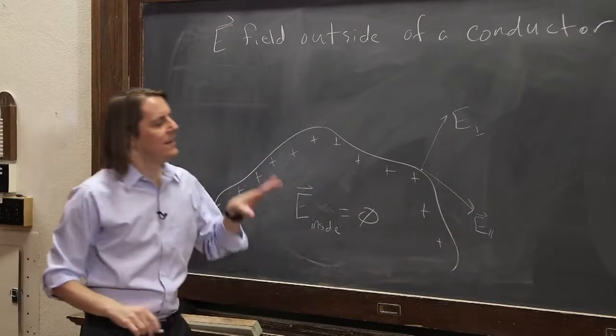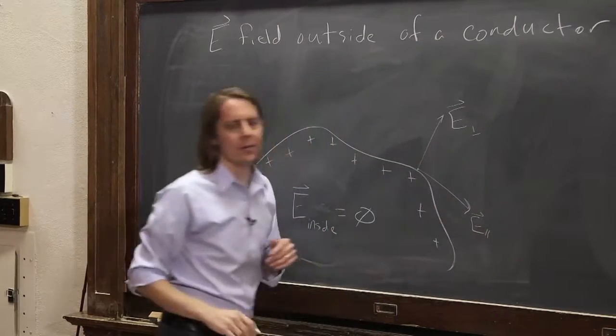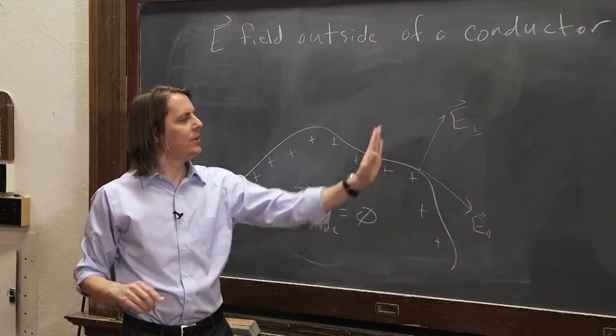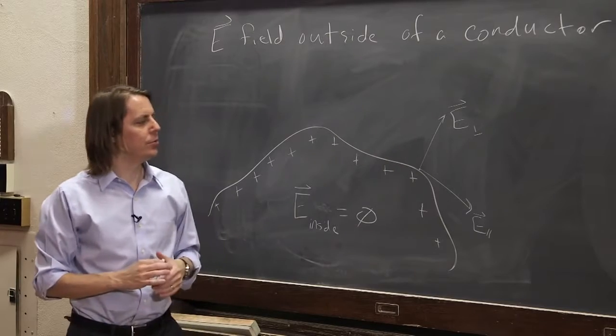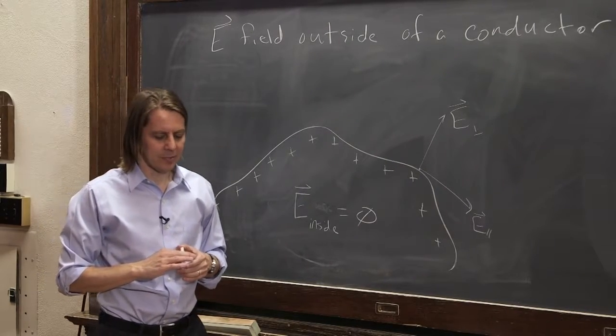So I don't mean inside. Inside is zero. What is the field just outside? That's the question. Right at the interface. So this is possible. Any field that exists right outside could be broken into those two components. So we just have to think about which of those components can exist.